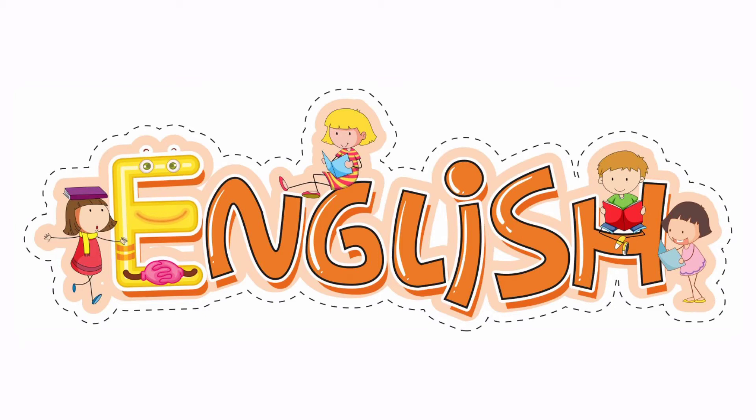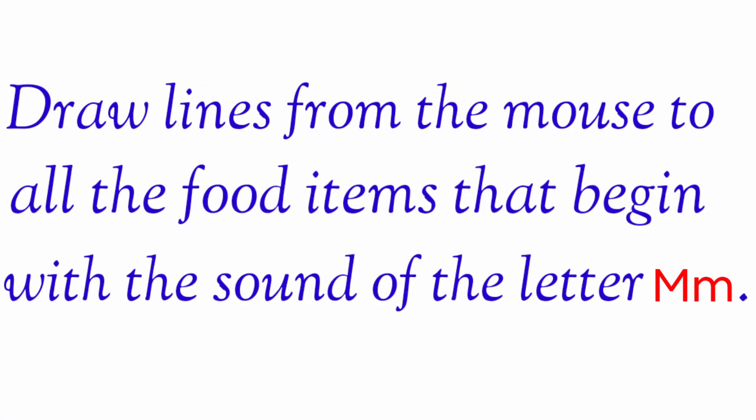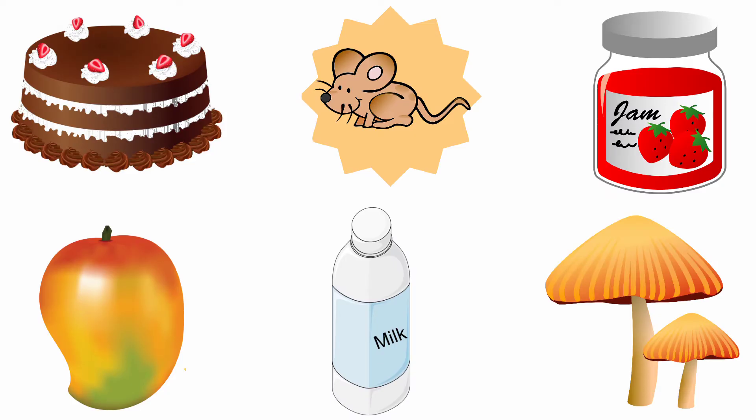Hi students, today in English we are going to do an activity. Draw lines from the mouse to all the food items that begin with the sound of the letter M. Here they have given a mouse and some food items. We are going to draw a line from the mouse to the pictures that begin with the sound of the letter M.